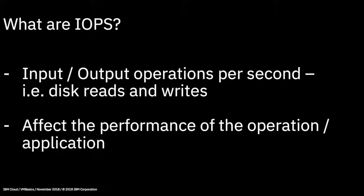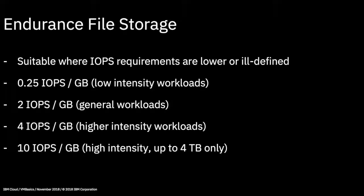There are two types of file storage: endurance and performance, offering different levels of IOPS. With endurance there are four different levels of IOPS, and it's most suitable when IOPS requirements are ill-defined or where lower IOPS are required. At 0.25 IOPS per gigabyte you'd expect low disk activity, and note that you cannot migrate up from this tier. 2 IOPS per gigabyte is good for general workloads such as departmental file shares, and 10 IOPS per gigabyte might suit a small database like MySQL linked to a website. Note that at this highest endurance tier, you can only create storage up to 4 TB in size.